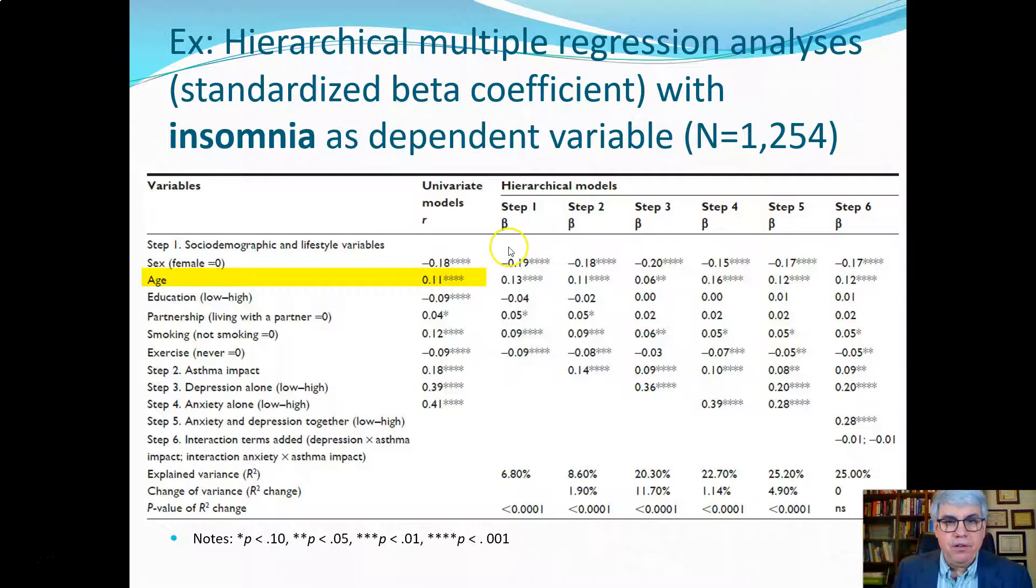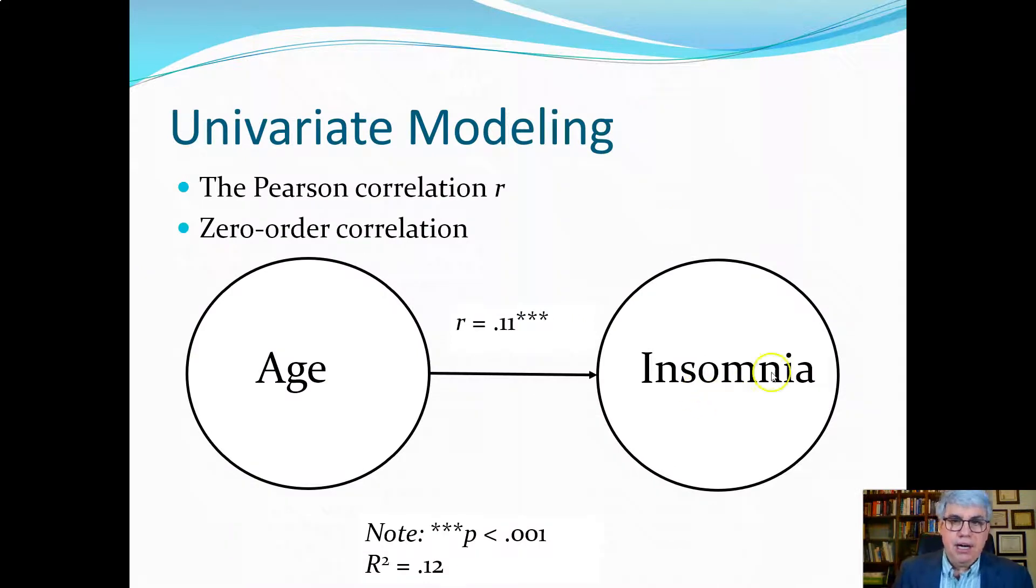This first column here, the univariate models, just gives the simple r between two variables. So let's say we were interested in the relationship between age and insomnia, here we've got r of 0.11 and it's got four stars, and in this chart four stars means p less than 0.001. So if we were to draw this it would look like this. We call this univariate modeling because there's only one predictor variable predicting our dependent variable.